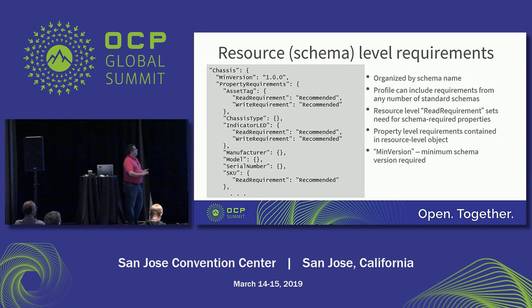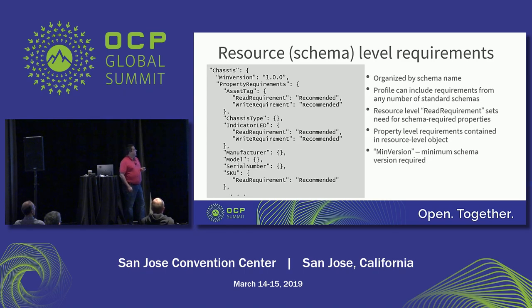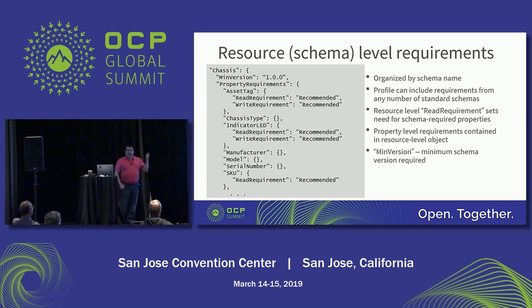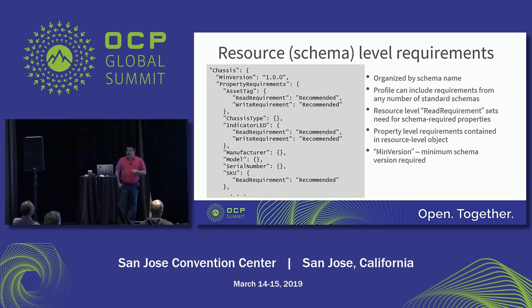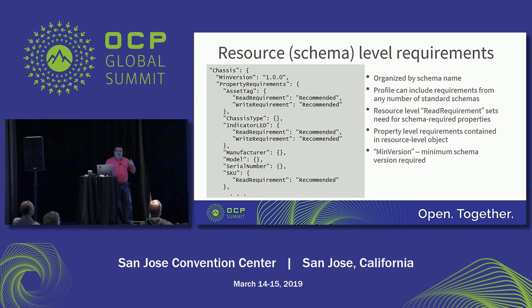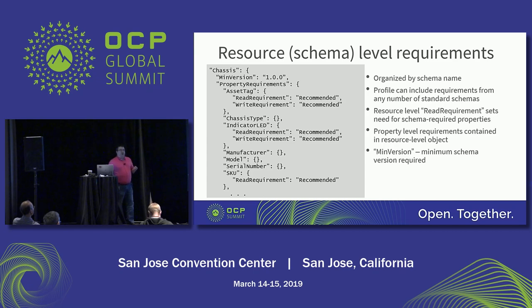The bulk of the profile document will be spent in the resource area. This example is taken from the OCP baseline profile and shows the requirements for the chassis resource. The name of that section is the name of the resource — you see it says "Chassis" — and then there's the minimum version required, so this says you have to have at least Chassis 1.0. Then it gets into the property requirements, showing the requirements for each individual property within that schema.